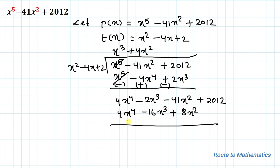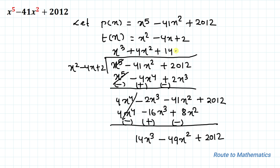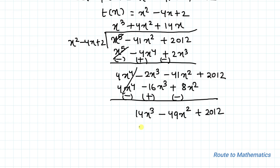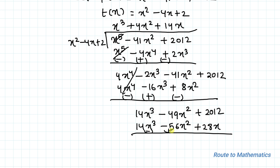After changing signs: positive becomes negative. These terms cancel. We then have 14x³ - 49x² + 2012. Next, we add 14x to the quotient: 14x³ - 56x² + 28x. Applying minus-plus-minus, those terms cancel.